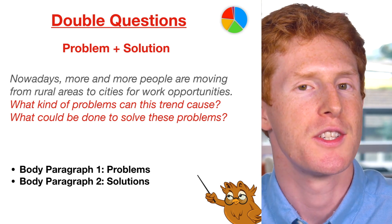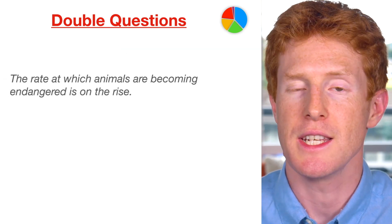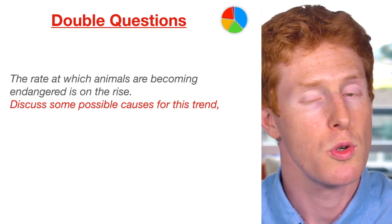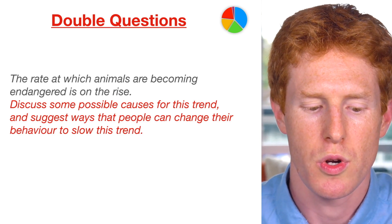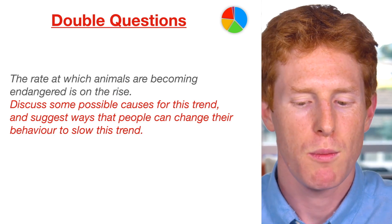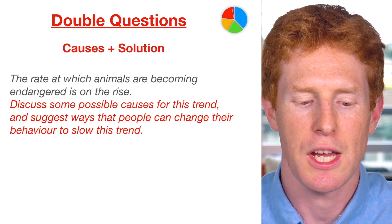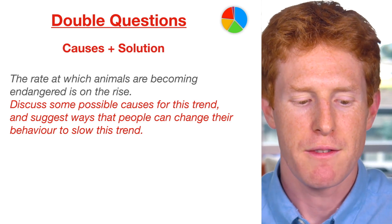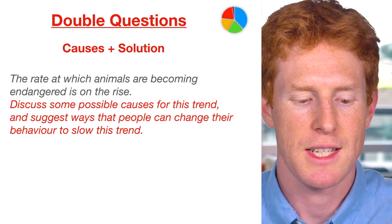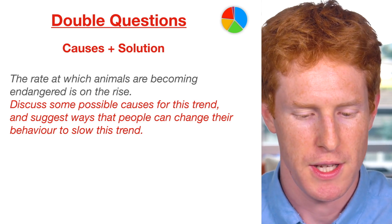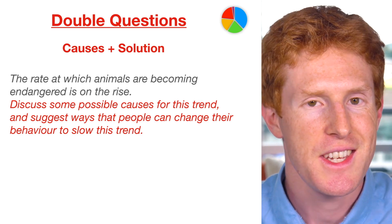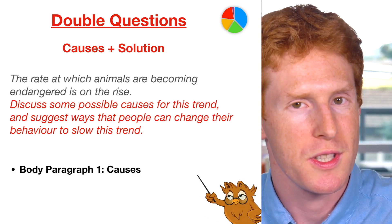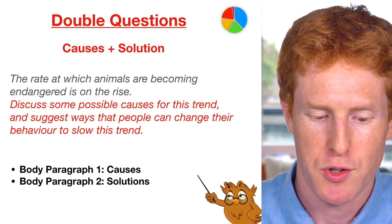However, there are other double question types. Here's another example: 'The rate at which animals are becoming endangered is on the rise. Discuss some possible causes for this trend and suggest ways that people can change their behavior to slow this trend.' This isn't a problem and solution — it's a cause and solution question. Even though it says 'discuss', if you look at what it actually asks, it says 'discuss some possible causes' — so we should give more than one. Body paragraph one looks at the causes and body paragraph two looks at the solutions.